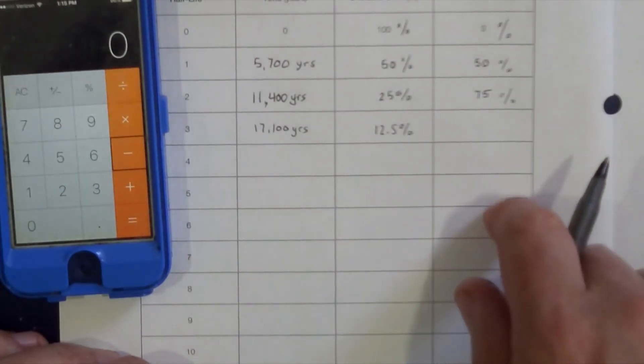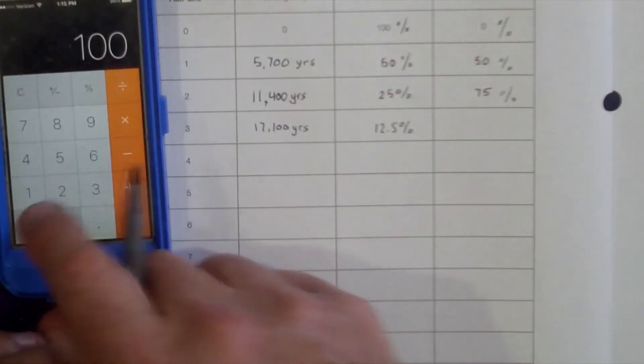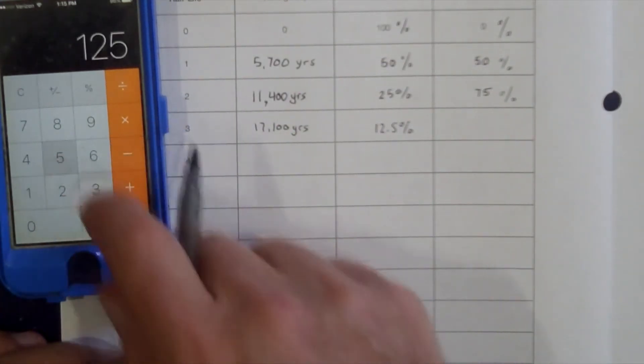To find the amount of Nitrogen-14, we're going to subtract 100 minus 12.5.